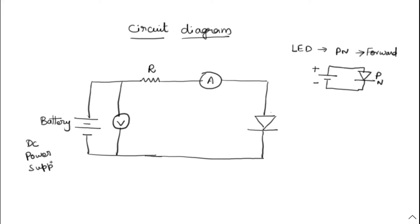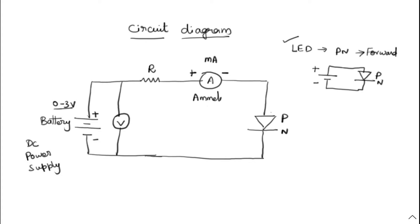The DC power supply value ranges from 0 to 3 volts for this experiment. It is connected to the PN junction diode — the positive terminal of the battery is connected to the P-type and the negative terminal to the N-type, so it is forward biased. In series, a resistance is connected, and the ammeter measures current in milliampere. The voltmeter is always connected in parallel to the battery, with positive and negative terminals.